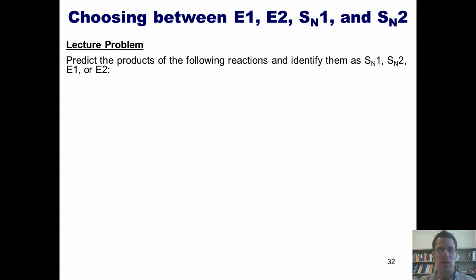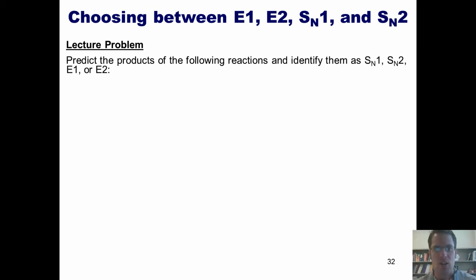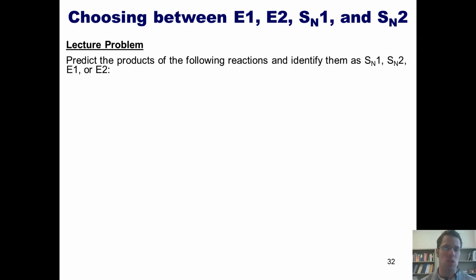Everything we've been learning in previous videos on chapter 8's coverage of substitution and chapter 9's coverage of elimination has been leading us to this destination. We now have the ability to determine if any given substitution or elimination reaction will proceed through an SN1, SN2, E1, or E2 mechanism. That is the question we're going to answer together for the ensuing examples.